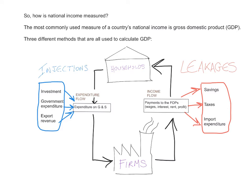In a more complex and open economy, you have injections like investment, government expenditure, and export revenue, and leakages like savings, taxes, and import expenditure. In the end, the expenditure flow, the income flow, and the output flow should be equal.